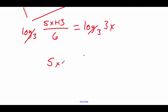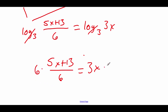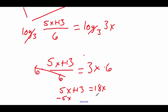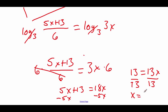Then our equation says (5x plus 13) over 6 equals 3x. Now this left-hand side has a fraction, so I want to get rid of that by multiplying that 6 over to the right-hand side. So we get 5x plus 13 equals 18x. Maybe we decide to subtract this 5x over to the right-hand side — then we've got 13 equals 13x. Last step, divide both sides by 13, so we get an x value of 1.